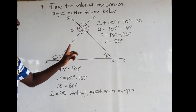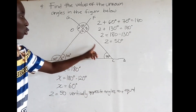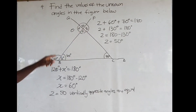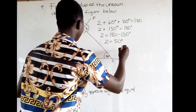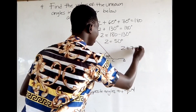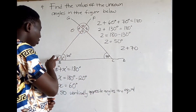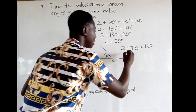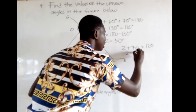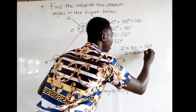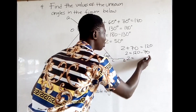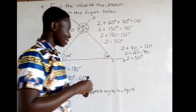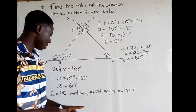Another property of a triangle is that the sum of two opposite interior angles of a triangle is equal to one exterior angle. So z plus 70 should be equal to 120. Therefore z is equal to 120 minus 70, giving z is equal to 50 degrees — the same answer confirmed by all three methods.